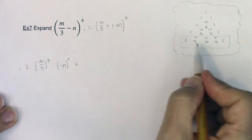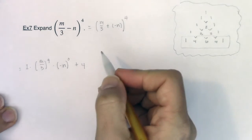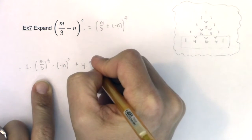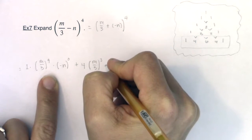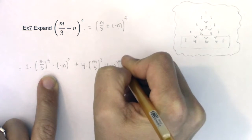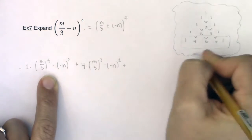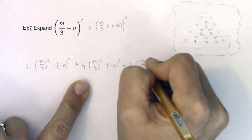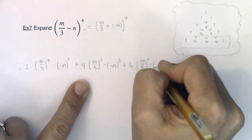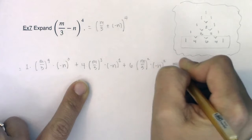All right, let's get the next few terms. We've got a 4 here. I'm going to decrease the power on m over 3. But I'm going to increase the power on negative n. My next coefficient is a 6. I'm going to decrease the power on m over 3. And again, increase the power on negative n.